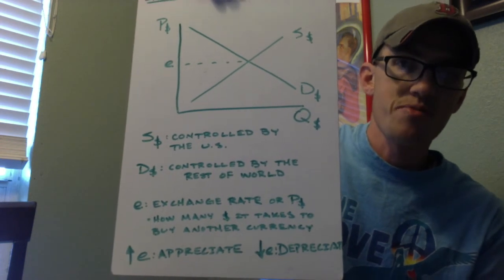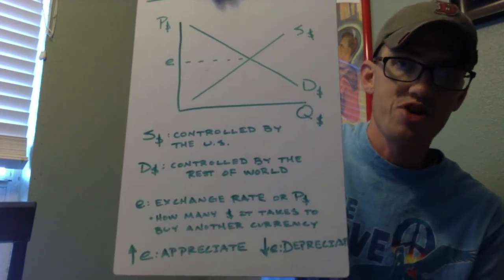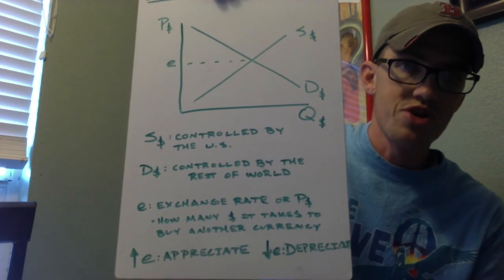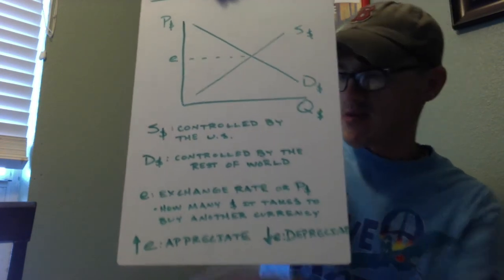When E is increasing, or the price of the dollar is increasing, we call that appreciation. When it's decreasing, call that depreciation. Probably need to pause, because we're moving on here.